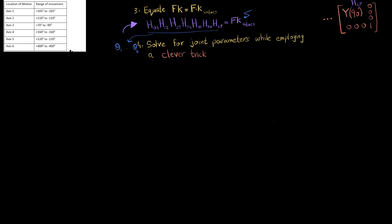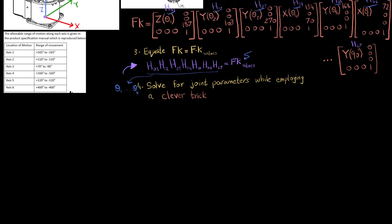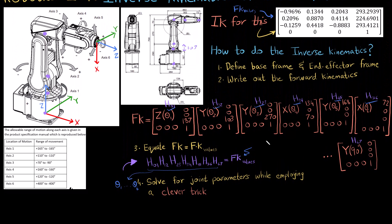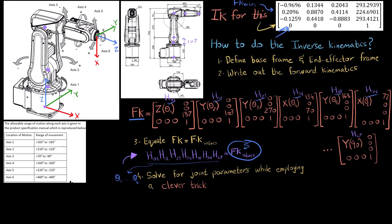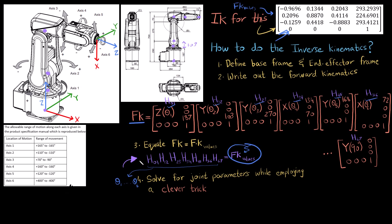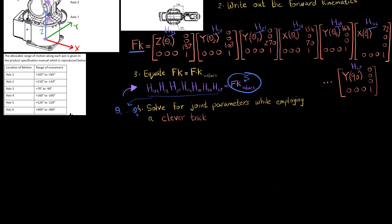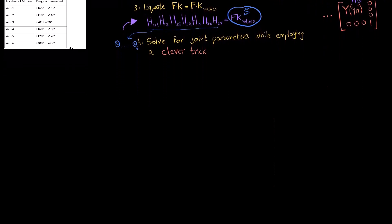To quickly refresh: this matrix on one side has theta one, theta two, theta three all the way to theta six. If it were easy, what we would do is equate these two forward kinematics expressions and solve for theta one through theta six. However, it becomes quite difficult to do that practically, so what we do is employ a very clever trick.